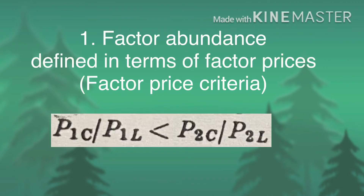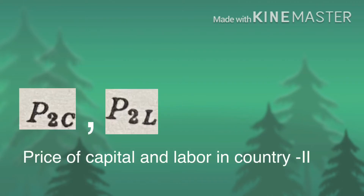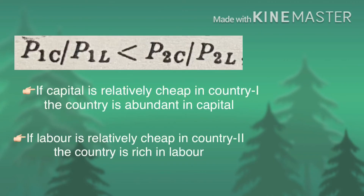According to this definition, country one is abundant in capital if p1c/p1l < p2c/p2l, where p1c is the price of capital in country one, p1l is the price of labor in country one, and p2c and p2l are the prices of capital and labor respectively in country two. In other words, if capital is relatively cheap in country one, the country is abundant in capital, and if labor is relatively cheap in country two, country two is rich in labor.